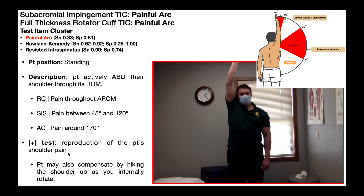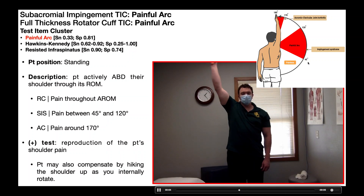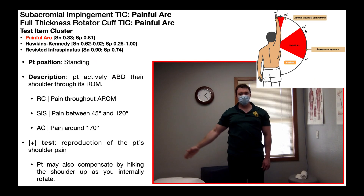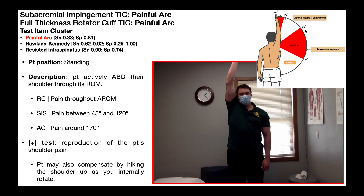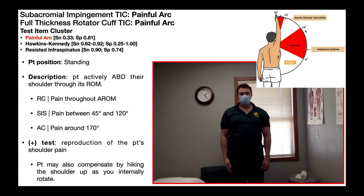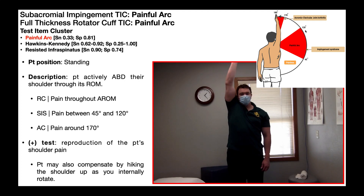Clinically speaking, you may see it as low as 45 degrees, so a lot of times when you look this up, you'll see the painful arc defined between 45 degrees and 120. When you're doing this in the clinic, it doesn't really matter if it's exactly 60, 50, 45, or 40 degrees — there's just an arc of pain as they go through shoulder abduction, and that would be considered a positive test.